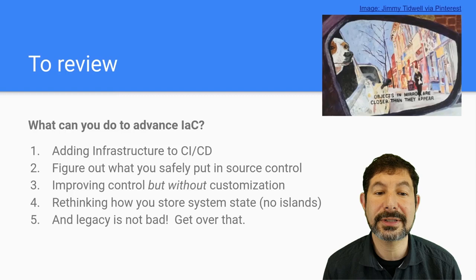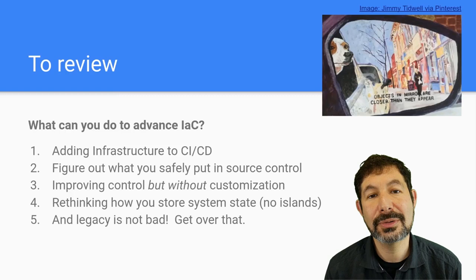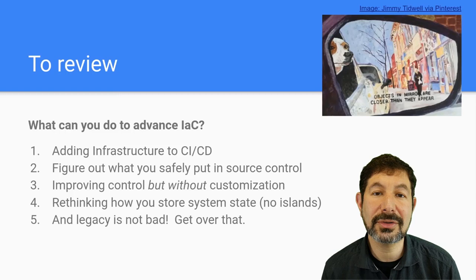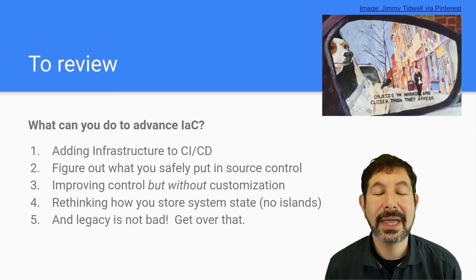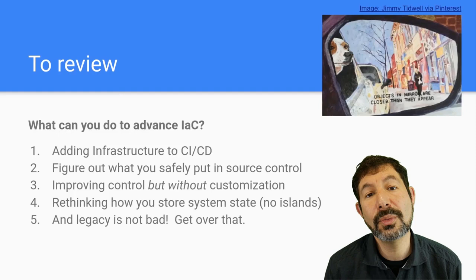And most importantly, legacy isn't bad — legacy is working software. Instead of trying to burn that down, figure out how to improve it. Figure out the small steps that you can isolate, reuse, or take advantage of. We have a lot of working systems in our data centers and infrastructure — a lot of hardware that's still productive, a lot of software and automation tools that are still productive. You want to be working in ways that take advantage of things that work, because those things are battle-tested and have learned lessons that are in the code.